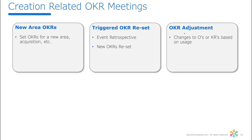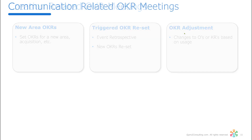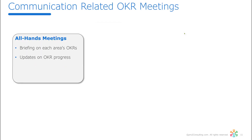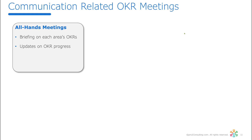Finally, there are communication-related OKR meetings — essentially all-hands meetings. This is where you might be briefing the rest of the organization on your area's OKRs, or updating them on the progress you're making. In a communication meeting, it's roughly 80% one person presenting and 20% Q&A. Don't do communications activities inside a performance meeting. If you want to brief or update people, hold a separate meeting. Performance meetings are just to deal with problems.